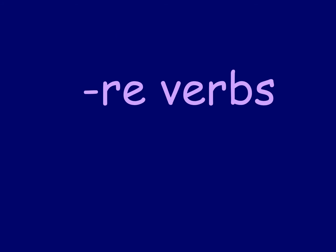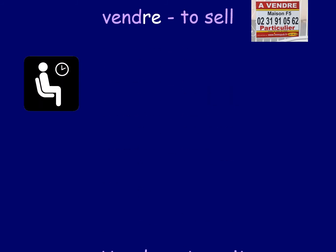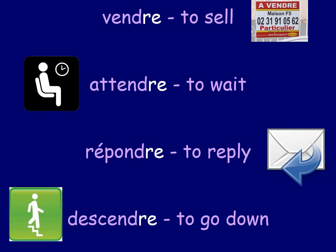Just like ER verbs, RE verbs are called that because they end in those letters — RE verbs end in RE. They're not as common as ER verbs; ER verbs make up 90% of verbs in French, so RE verbs are less common but we still need to know them. Some examples: 'vendre' (to sell), 'attendre' (to wait), 'répondre' (to reply), 'descendre' (to go down).